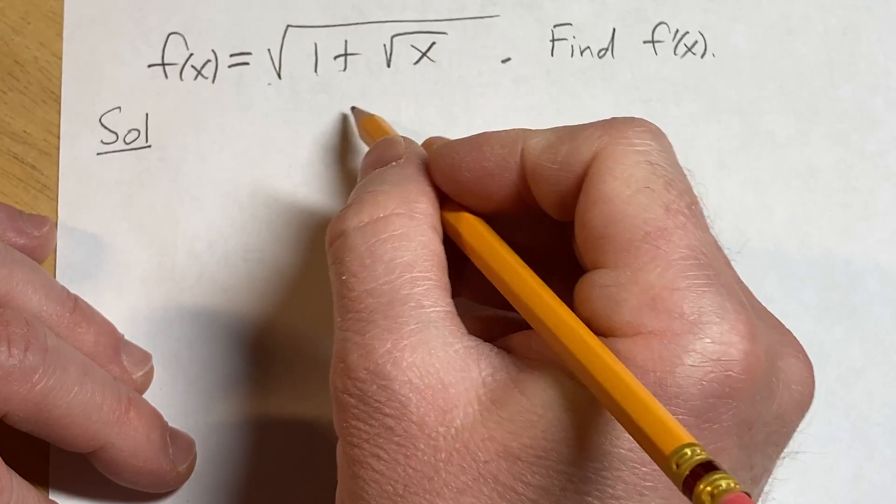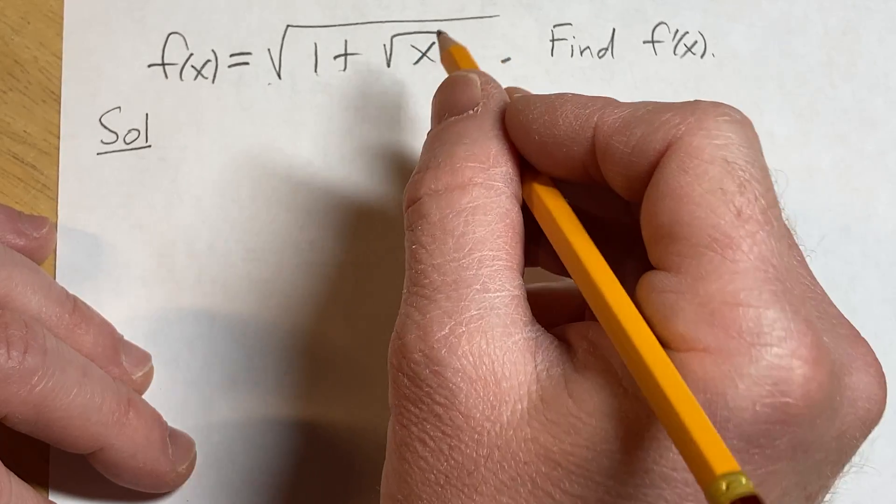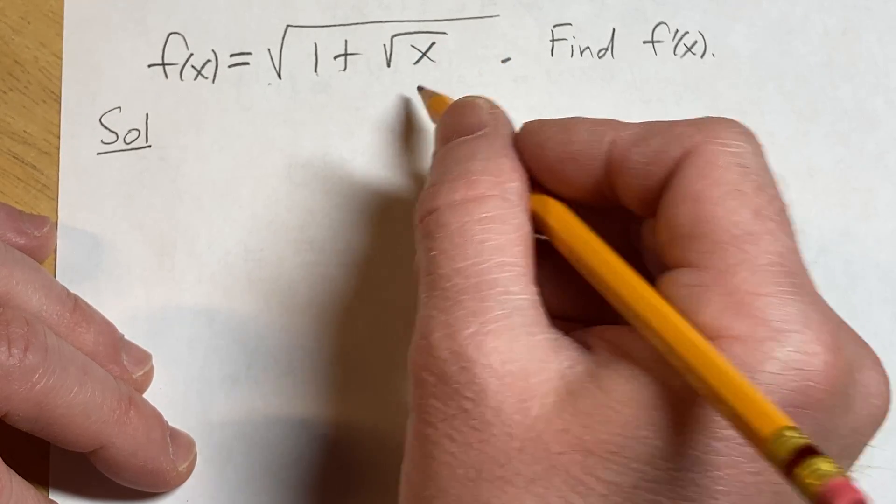Solution. We will start by rewriting the square roots as powers, because the square root of x is the same thing as x to the 1 half.